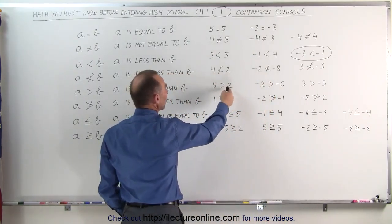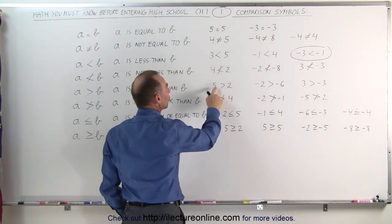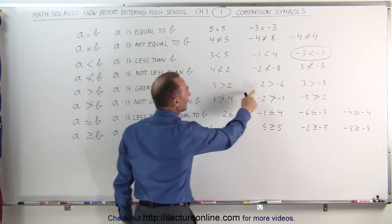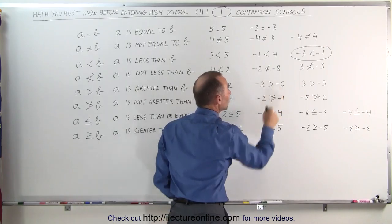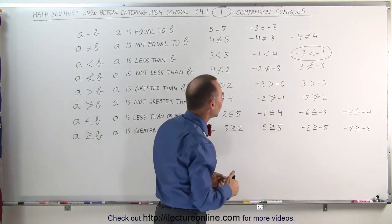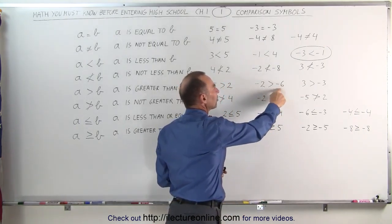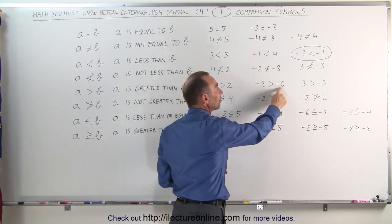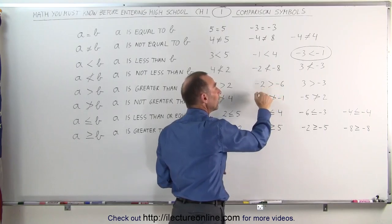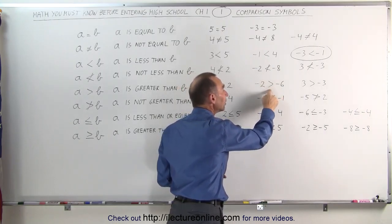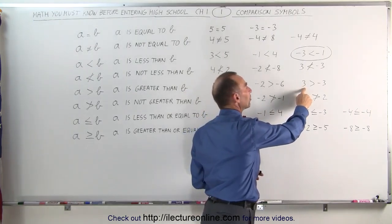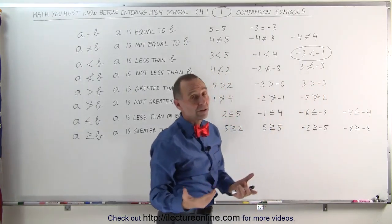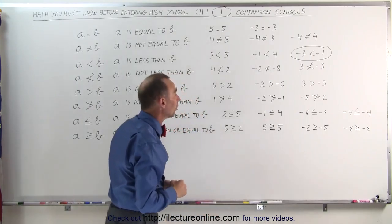When the symbol is reversed in the other direction, the number on the left side is greater than the number on the right side. So we say 5 is greater than 2. Negative 2 is greater than negative 6. That seems hard to imagine, but negative 6 is farther to the left on the number line than negative 2, so therefore negative 6 is less than negative 2, which makes negative 2 greater than negative 6. 3, being a positive number, is greater than negative 3, which is a negative number. All positive numbers are always greater than all negative numbers.